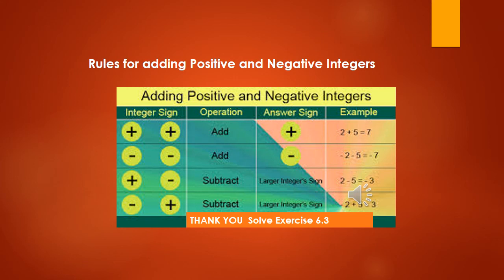Rule 3: if one integer is positive and another is negative, we subtract them and the sign of the answer is that of the larger integer. For example, 2 minus 5 — minus 5 is larger, so the sign is minus, giving minus 3. Rule 4: if we have minus 2 plus 5 — the signs are different — we subtract and the sign is of the larger integer, which is plus 5. So 5 minus 2 equals 3, giving plus 3.